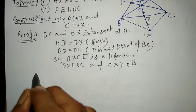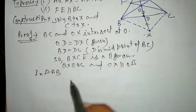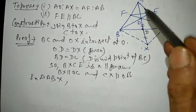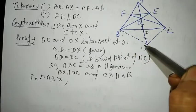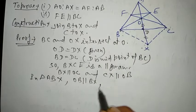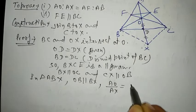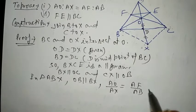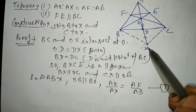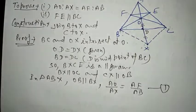In triangle ABX, OB is parallel to BX. Therefore AO upon AX is equal to AF upon AB. This is equation 1.